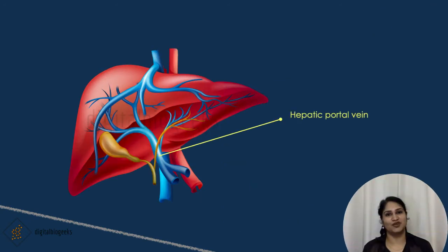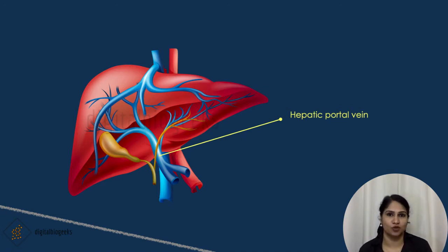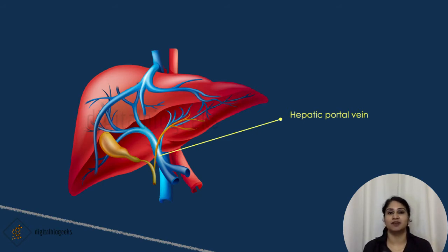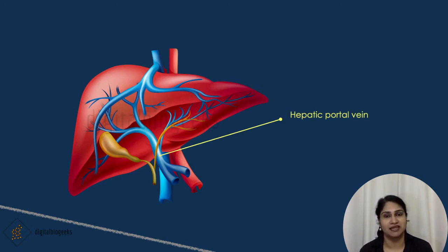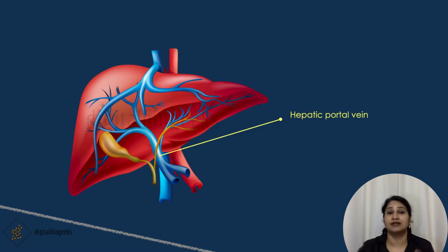There is one unique vein known as the hepatic portal vein. The hepatic portal vein carries deoxygenated blood to the liver — not to the heart. It carries deoxygenated blood from the gallbladder, gastrointestinal tract, pancreas, and spleen into the liver. It is not considered a true vein, as it carries blood to the liver rather than to the heart.